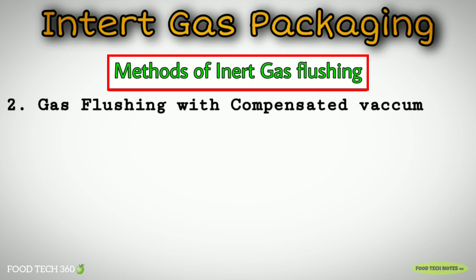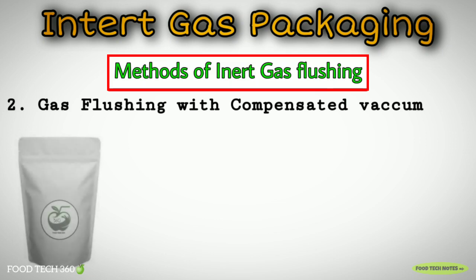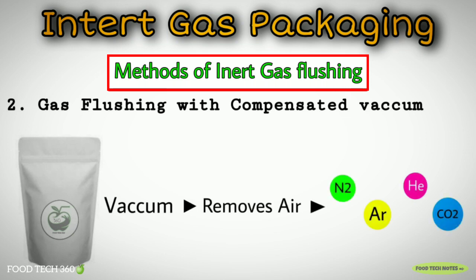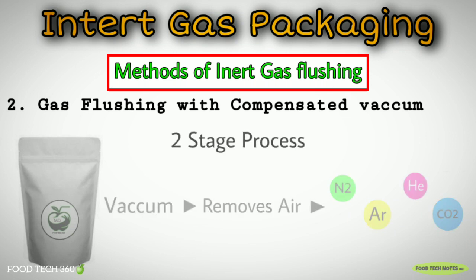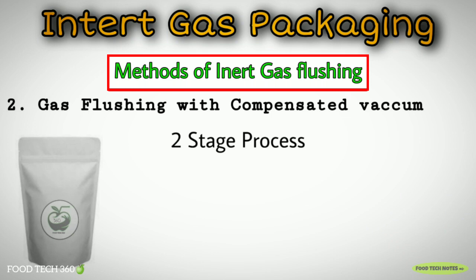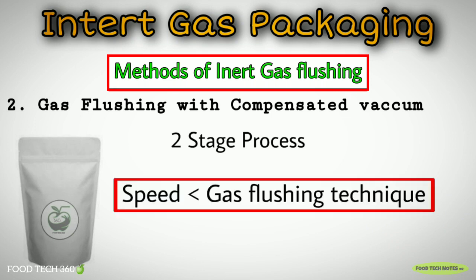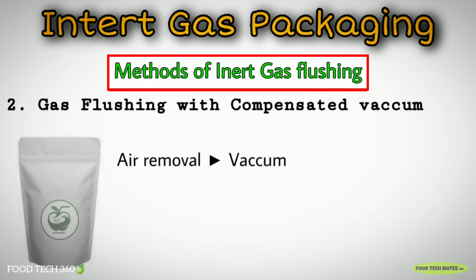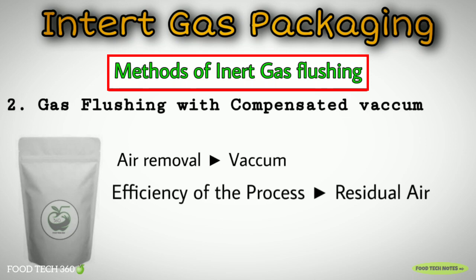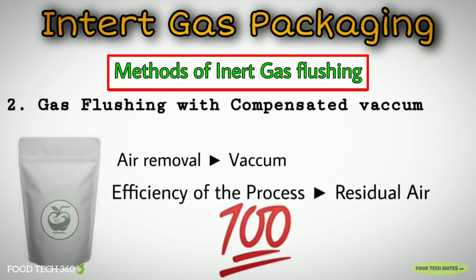Gas flushing with compensated vacuum: The compensated vacuum process first applies a vacuum to remove the air from inside a container holding the food, and then introduces the desired gas or gas mixture via lances or pods. Machines designed to perform this operation are of the chamber variety. Since this is a two-stage process, the speed of operation is slower than the gas flushing technique. However, because the air is removed by vacuum, the efficiency of the process with respect to residual air levels is much superior.